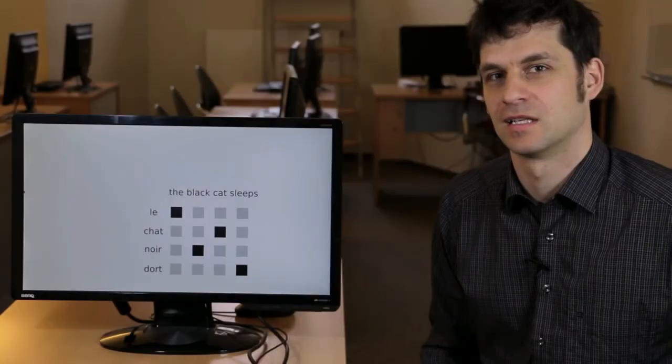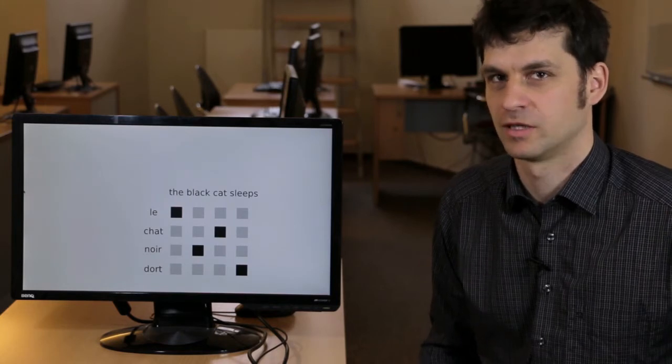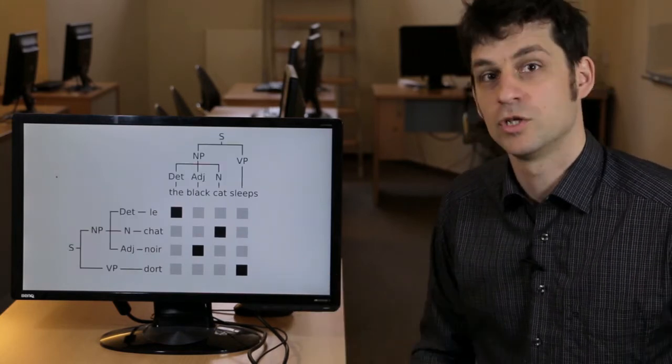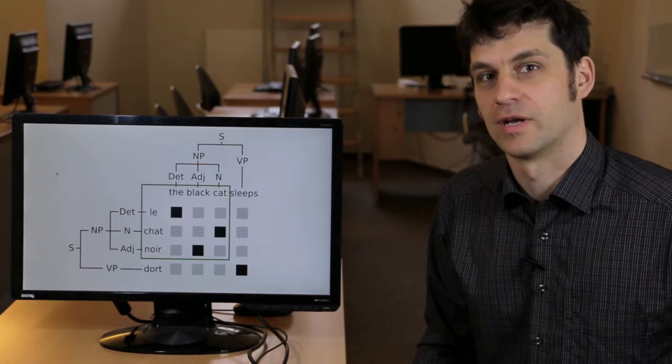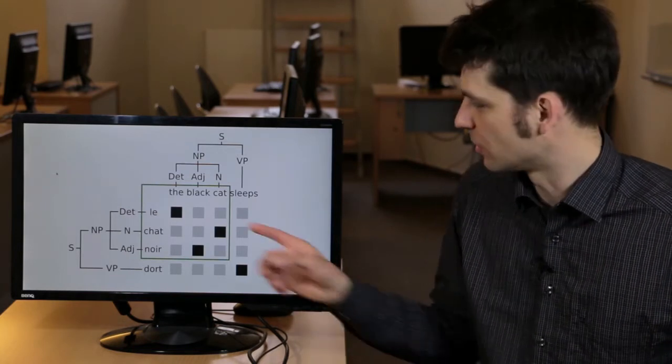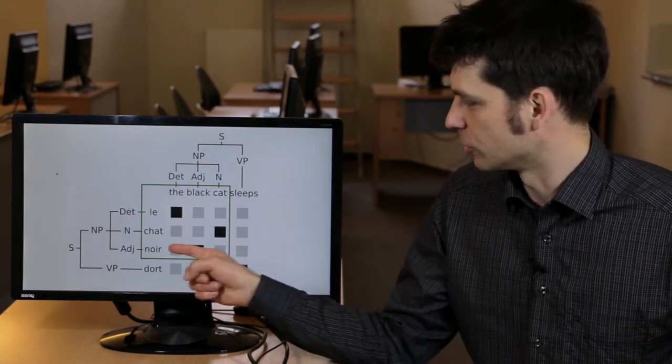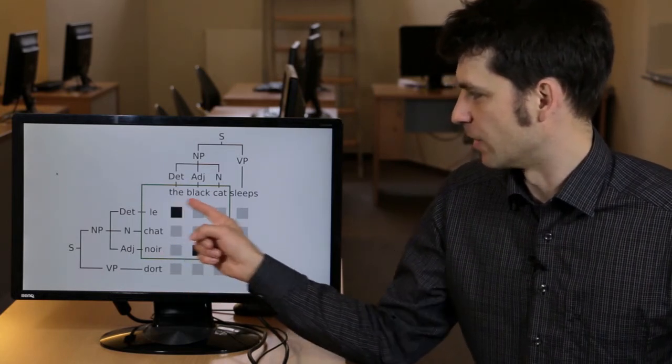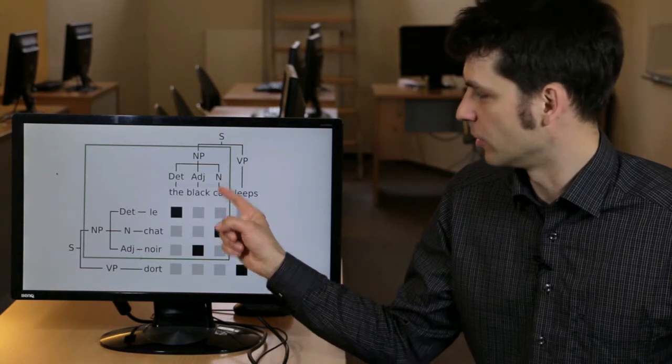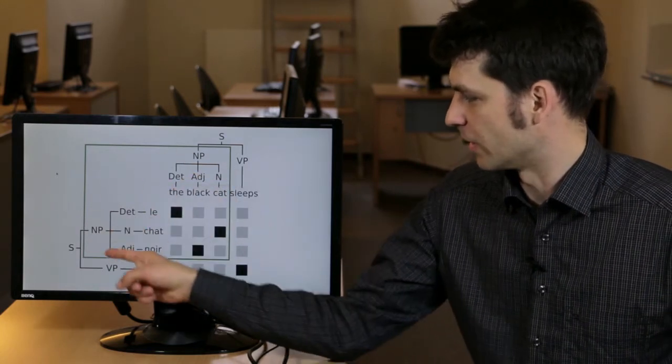So how do we get this synchronous grammar? Well, we extract it from a word-aligned corpus. We just need to add the trees. So again, we'll be extracting phrases that are consistent with the word alignment, but we don't learn only that Le Chat Noir is the black cat, but we also learn the syntactic structure with that.